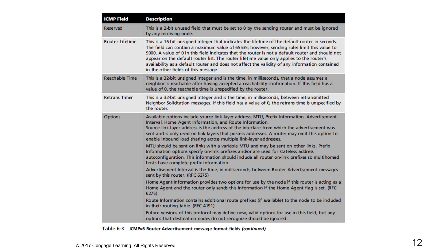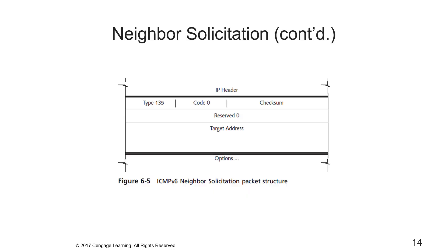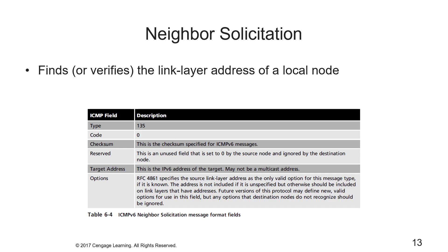For neighbor solicitation, a node can send a neighbor solicitation message to find or verify the link layer address of a local node, to see if a node is still available, or to check that its own address isn't already in use by another node — this is called duplicate address detection, or DAD. The table shows the various format fields for the neighbor solicitation message, along with the packet structure.